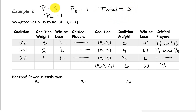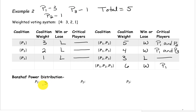Now to compute the Banzhaf power distribution. The power index for player 1 is 3 over 5, so 3 fifths. For player 2, it's 1 over 5, so that's 1 fifth. And for player 3, also 1 over 5, so 1 fifth.